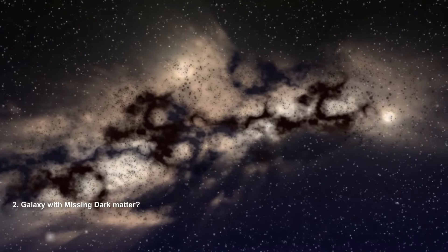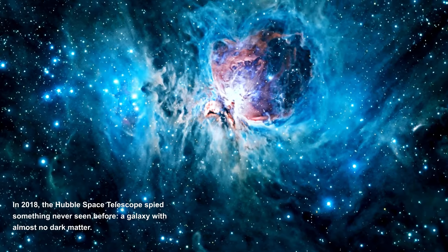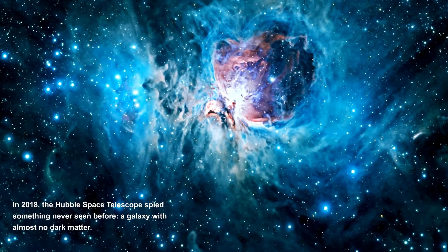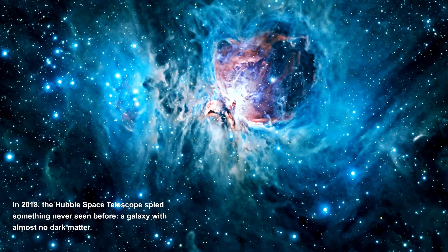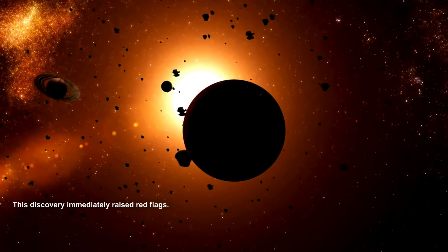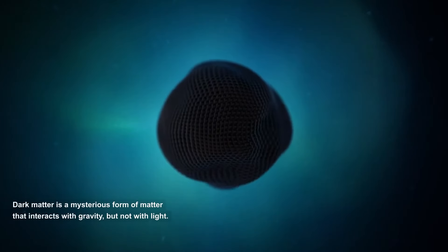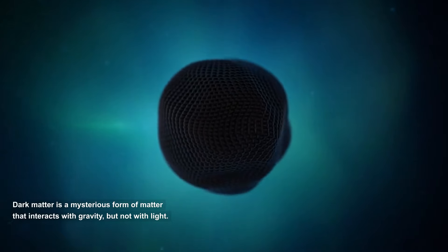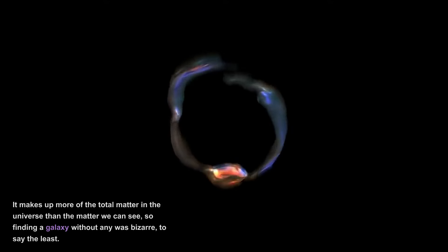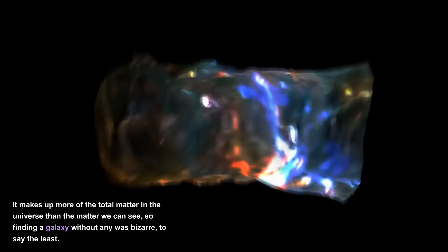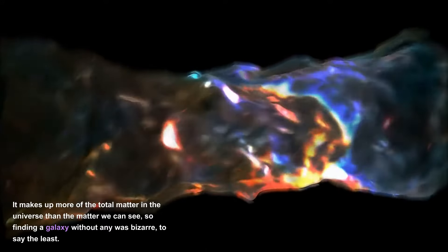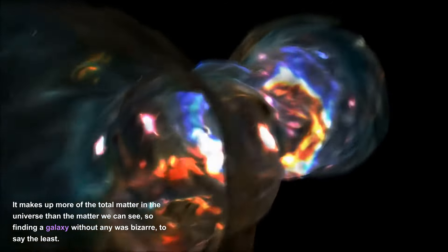Galaxy with missing dark matter? In 2018, the Hubble Space Telescope spied something never seen before: a galaxy with almost no dark matter. This discovery immediately raised red flags. Dark matter is a mysterious form of matter that interacts with gravity, but not with light. It makes up more of the total matter in the universe than the matter we can see. So finding a galaxy without any was bizarre, to say the least.